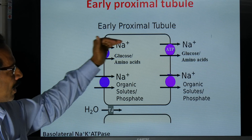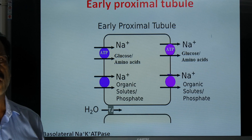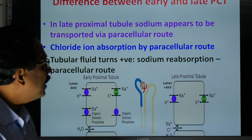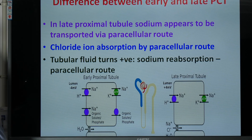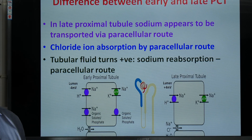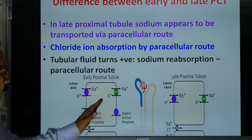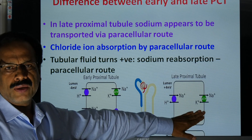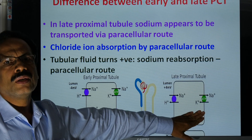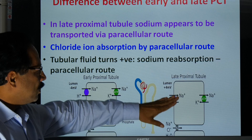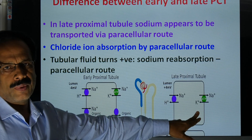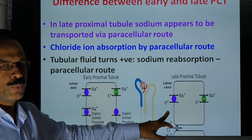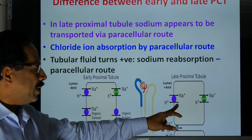This is the reabsorption of sodium, glucose, amino acids, and water at the early part of the proximal convoluted tubule. When we look at the distal part of the proximal convoluted tubule, almost all the movement happening in the early part also happens at the late part, including the Na⁺/H⁺ antiporter where sodium moves in and hydrogen moves out.